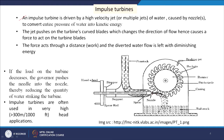The jet pushes on the turbine's curved blades, changing the direction of flow and causing a force to act on the blades. The water changes direction while the blades are forced to move, giving circulatory movement to the rotor. The diverted water flow is left with diminishing energy — the tailwater loses the energy available upstream. If the load on the turbine decreases, the governor reduces water flow by pushing the needle into the nozzle. Impulse turbines are often used in very high head applications.